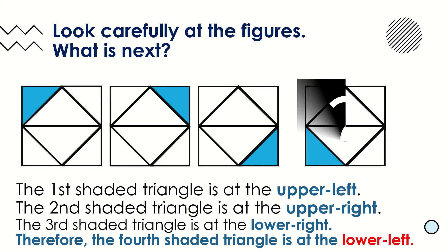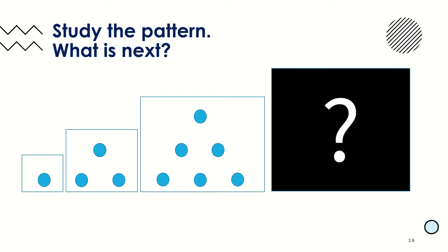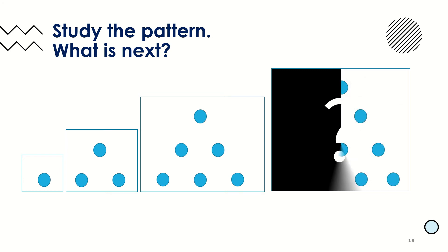Let us try this new set of figures — what will be the next figure? The first figure is composed of only one dot. The next is a triangular set of three dots. The third figure is a triangular set of six dots. From this pattern, the next pattern should still be a triangular set of dots. Therefore, by continuing this pattern, the next figure will be a triangular set of ten dots.